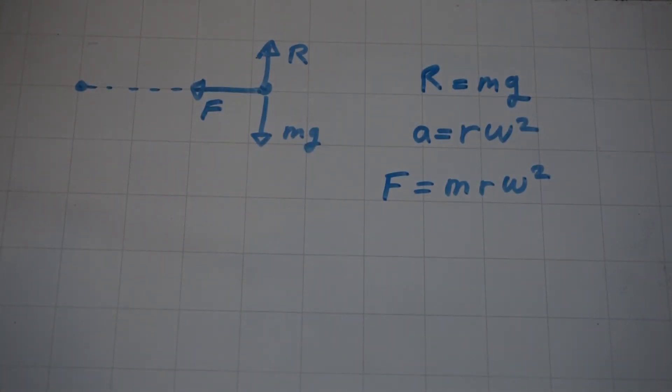And we know that the friction force will be the coefficient of friction, mu, multiplied by the normal reaction, which in this case is equal to mg.